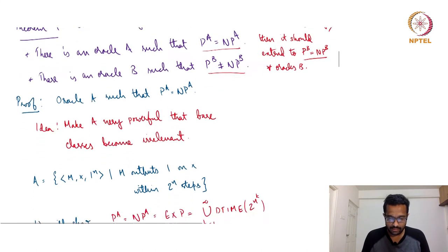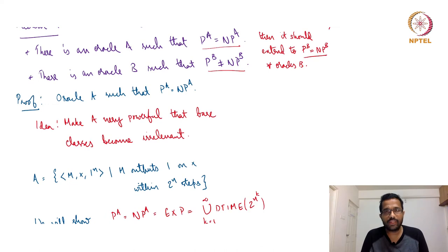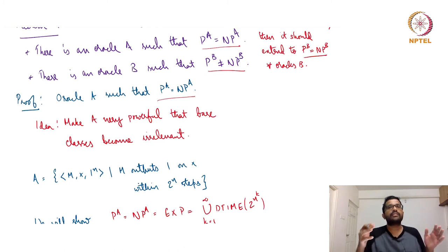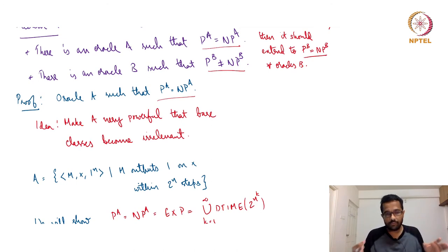Let us see the first part of the proof: constructing an oracle A such that P^A equals NP^A. The basic idea is to make A very powerful — so powerful that it does not matter what kind of base machine is asking queries. Even if one has non-determinism and one does not, the oracle is so powerful that it does not really matter if the base machine had non-determinism or not.